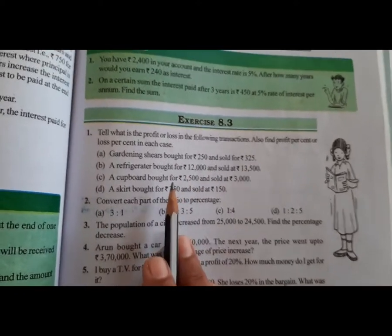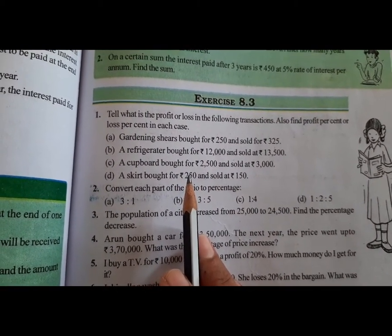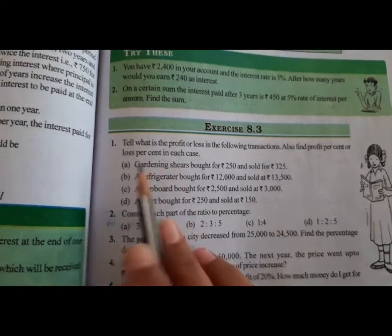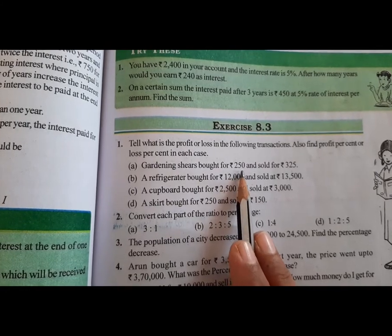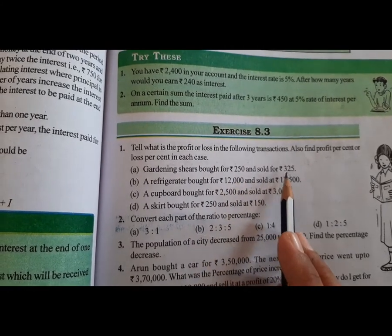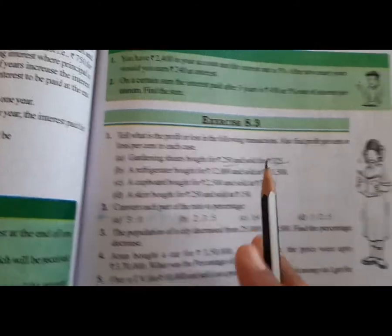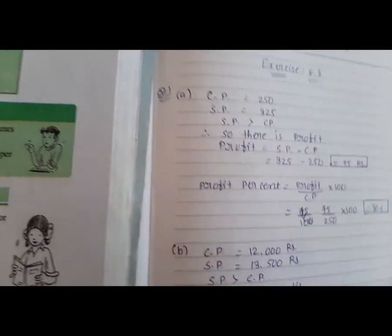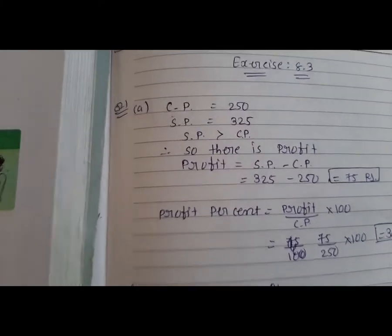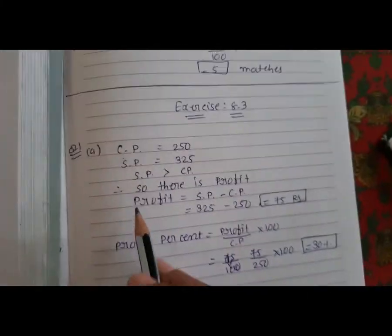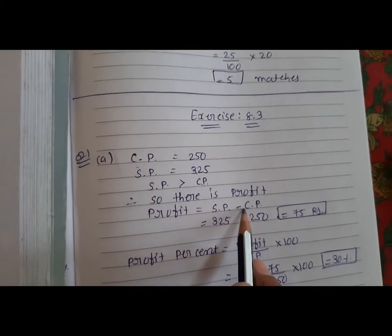Here we have the selling price and cost price. Gardening shears bought for $250 and sold for $325. This is the cost price and this is the selling price. Cost price is $250 and selling price is $325. The selling price is more than the cost price, so there is profit.